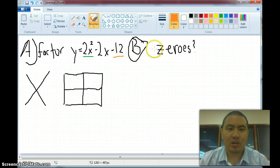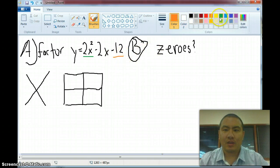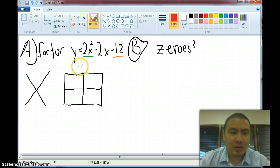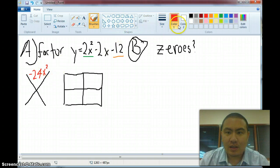The first thing you do is you take 2x squared and negative 12 and you multiply those two together. When you multiply those two together, you get negative 24x squared. And then you go ahead and take this part right here, the middle term, and you're going to put that on the bottom, negative 2x.